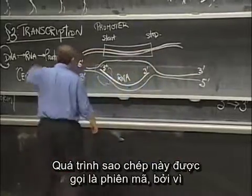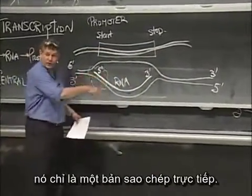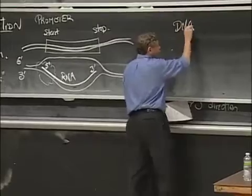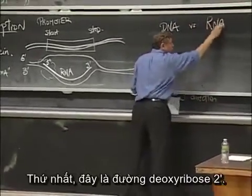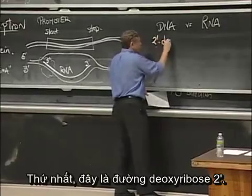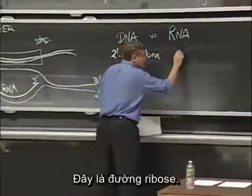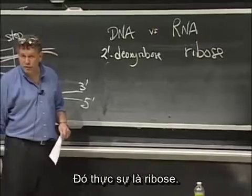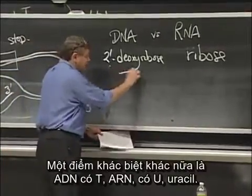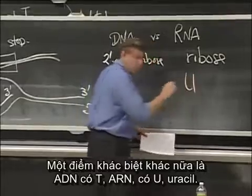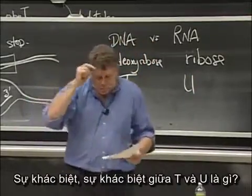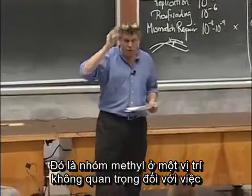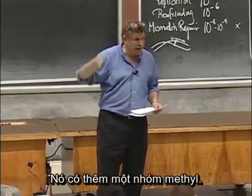This process of copying is called transcription because it's just a direct transcribing. So what's the difference between DNA and RNA? Two differences. One, this is two-prime deoxyribose. This is ribose — it's not two-prime deoxy, it's truly ribose. The other difference: where DNA has T, RNA has U — uracil. What's the difference between T and U? The difference is a methyl group — it's a methyl group in an unimportant position for base pairing. It has an extra methyl group.